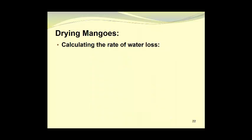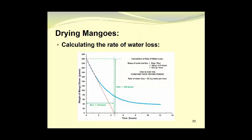We can calculate the rate of water loss during the constant rate drying period by taking the slope of that line that we just drew in the previous slide. So the slope of the solid red line is equal to the rise divided by the run. And we've determined the rise as being 240 grams and the run as being 4.5 hours. This was done by taking two points on that red line. For convenience, we have chosen the points where that red line crosses the vertical axis, which is at 240 grams, and also crosses the horizontal axis. So that gives us a rise of 240 grams, and that took 4.5 hours, which is the value of the run. This gives us a rate of 53.3 grams of water being removed per hour, and this is for the constant rate drying period. So the rate of water loss is 53.3 grams of water per hour.